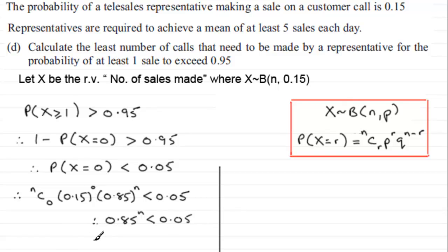Now I'm going to take logs to base e—they're natural logs—and if I did that, I would therefore have the natural log of 0.85 to the power n is less than the natural log of 0.05. Using the power rule for logs, I can bring the power n out to the front, so I therefore have n multiplied by the natural log of 0.85 is less than the natural log of 0.05.